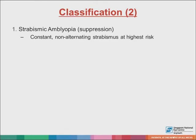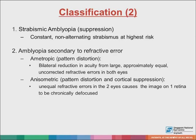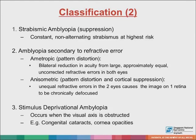Another way to classify amblyopia is according to its etiology. Firstly, amblyopia can be due to a strabismus, where a constant non-alternating strabismus is at highest risk. Secondly, it can be due to a refractive error, where amblyopia can develop as a result of large and equal refractive errors in both eyes, or unequal refractive errors in either eye, one being significantly higher than the other. Lastly, it can be a result of an obstruction of the visual axis, also known as stimulus deprivation amblyopia, such as from a congenital cataract.